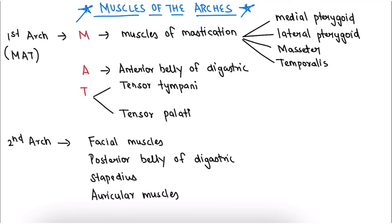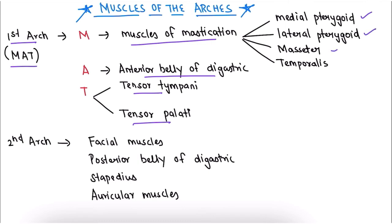Moving on to the muscles derived from pharyngeal arches. For the first pharyngeal arch we can remember it by MAT: M for muscles of mastication, A for anterior belly of digastric muscle, T for tensor tympani and tensor veli palatini. The muscles of mastication are medial pterygoid, lateral pterygoid, masseter, and temporalis.